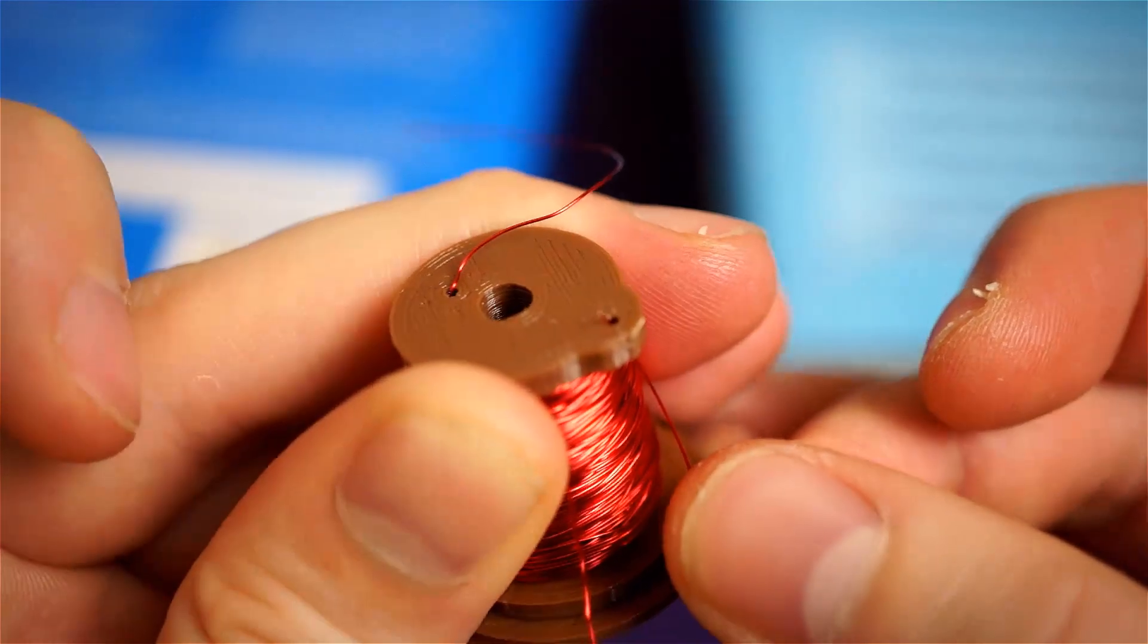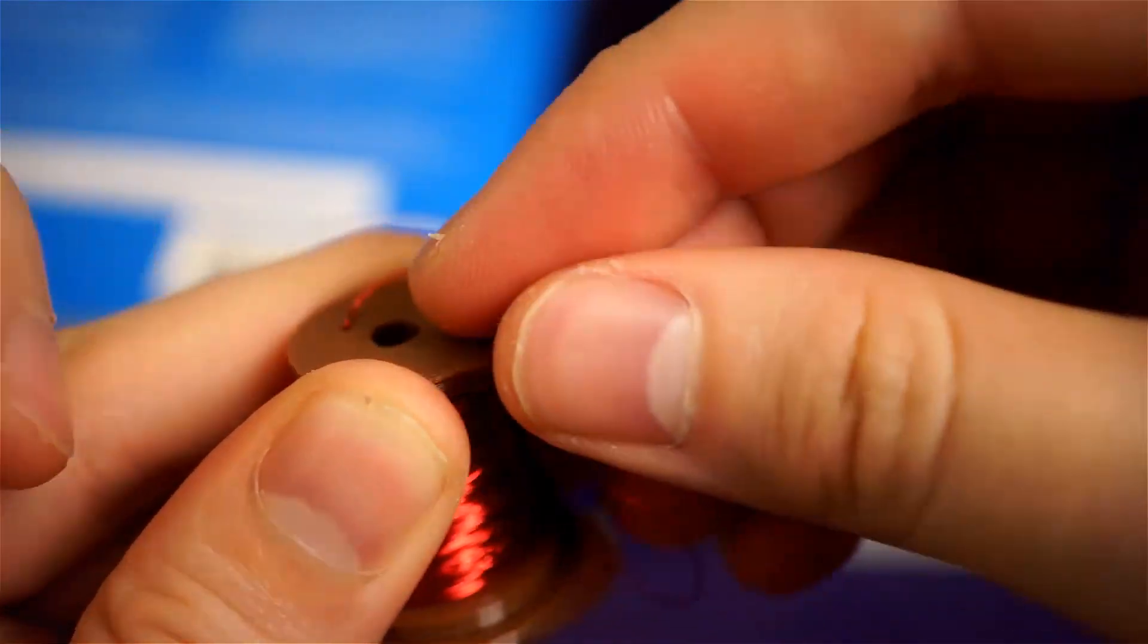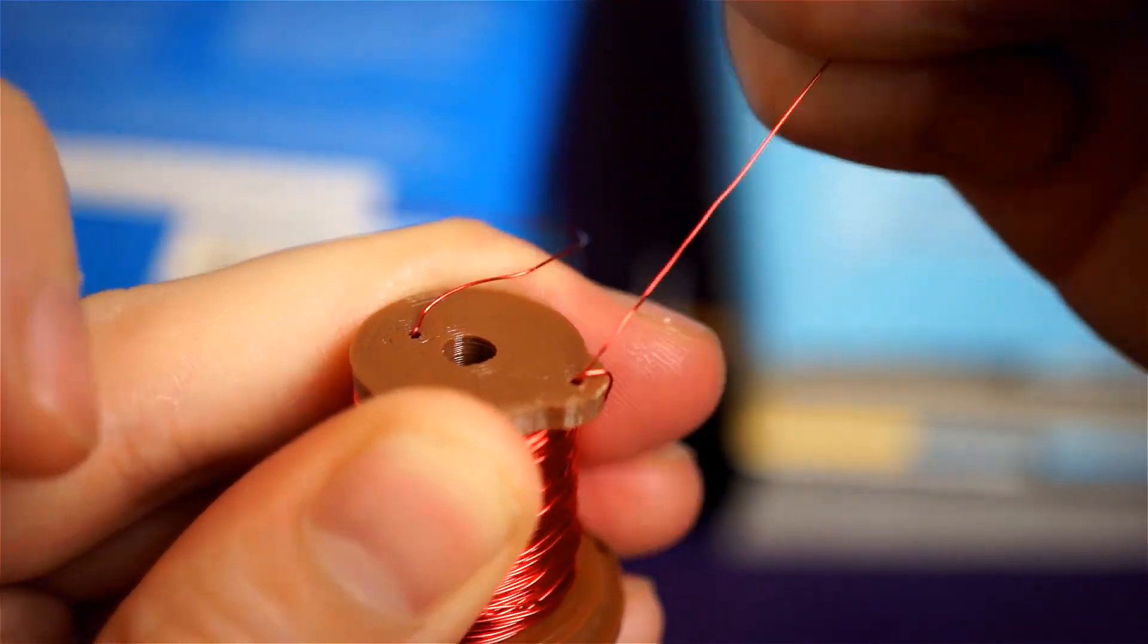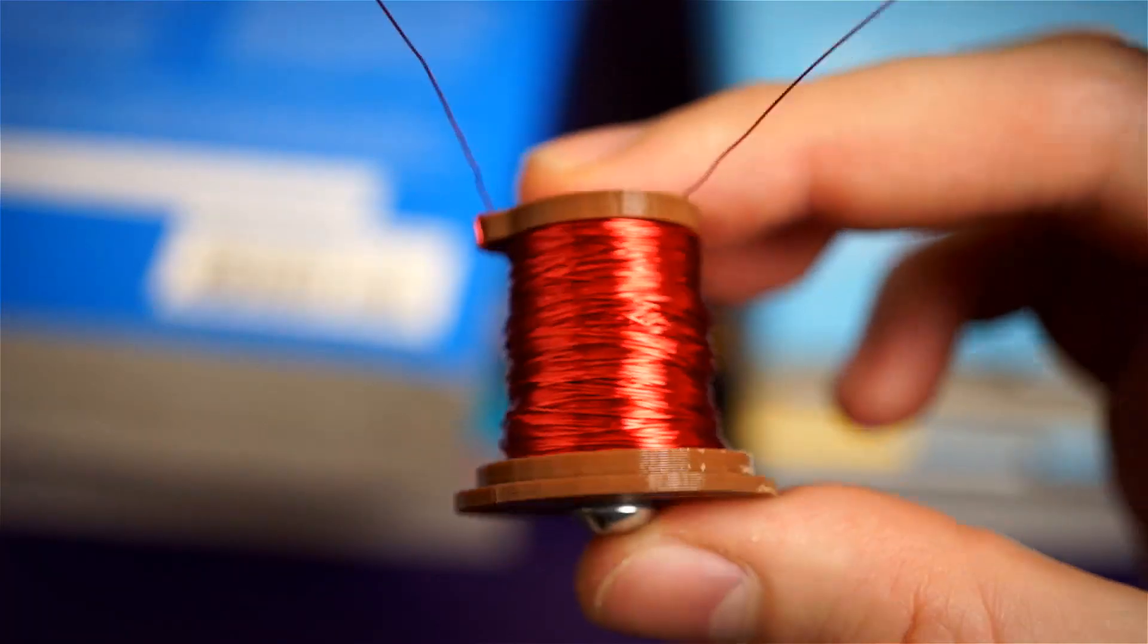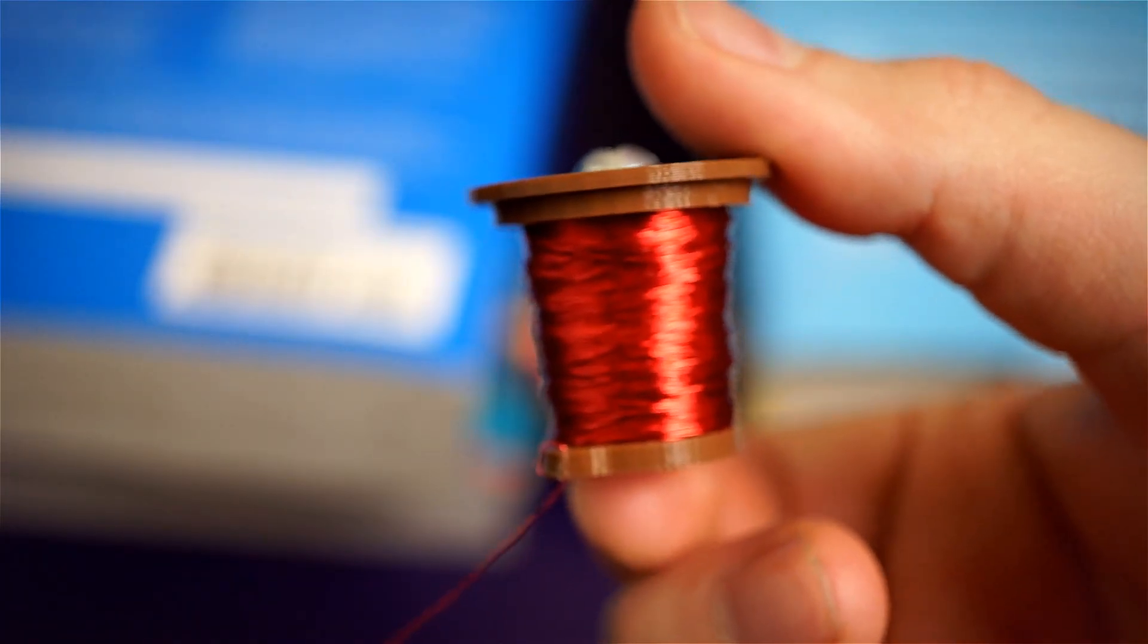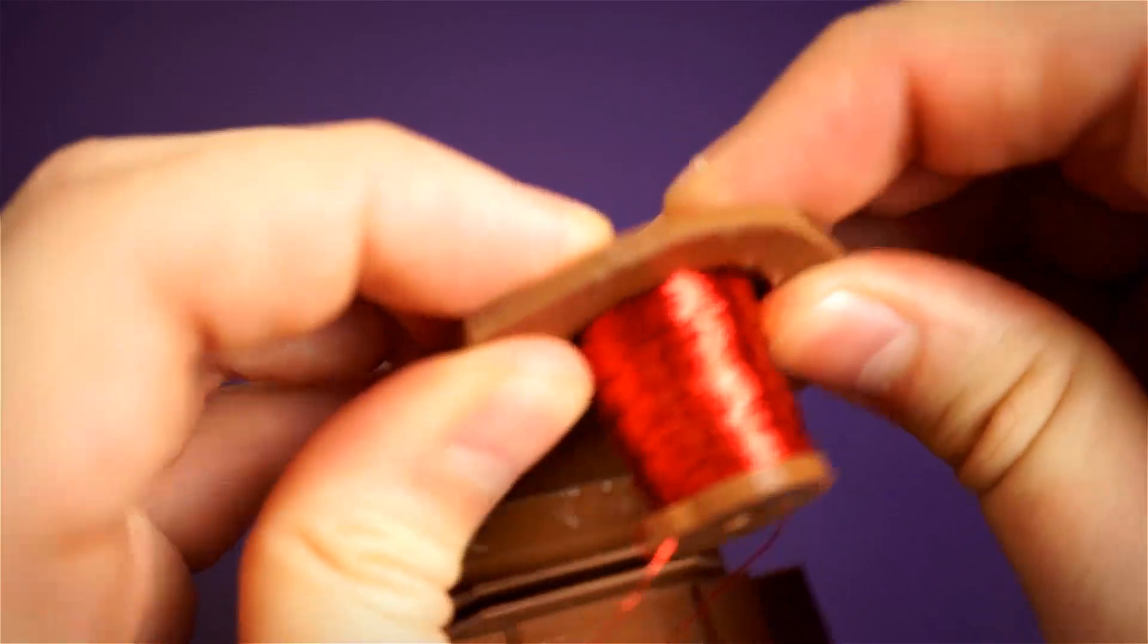When it looks about done, loop the wire through this hole a couple times to secure the wire. Cut it, but also leave a few inches on this side too. Now that the coil is done, it should fit tightly into the top of the arm.